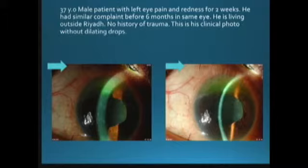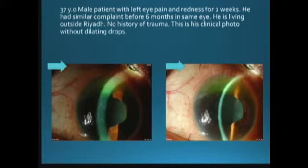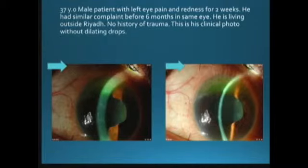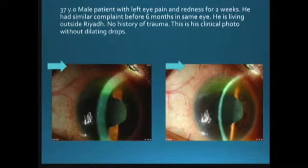The fact that he is living outside Riyadh is important: he may not be able to reach the hospital easily, so medical care may not be as good. Also, he could be living in a rural area, which is associated with more fungal or other related problems. The social background of the patient is important — something we sometimes neglect, especially in the ER. You need to ask the patient where he is from, especially for those with chronic or repeated conditions.